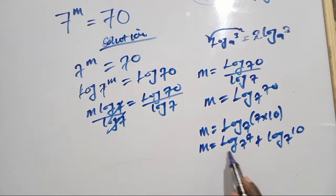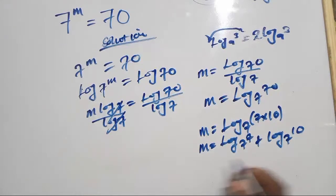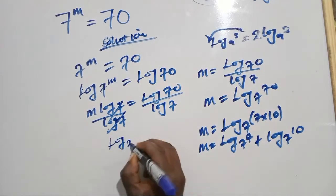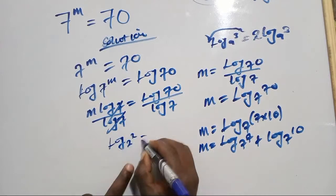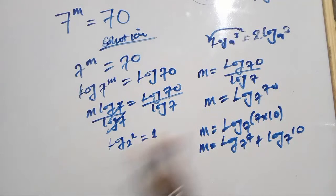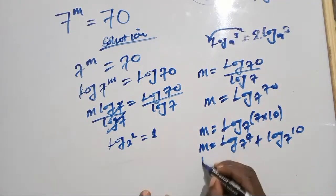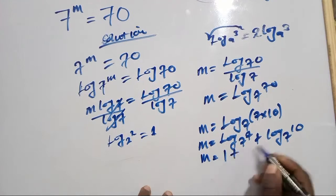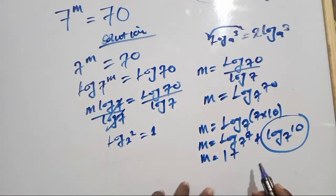And log base 7 of 7 is 1. There's a rule which says whenever you're having log base 2 of 2, this one should be equals to 1. So here we're going to have m equals 1 plus log base 7 of 10. Then we can change the logarithm base.